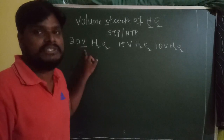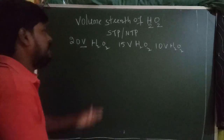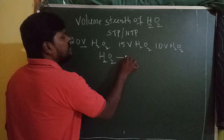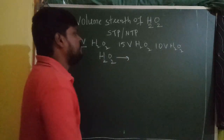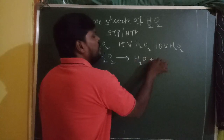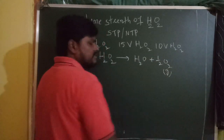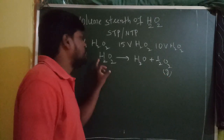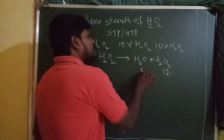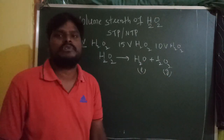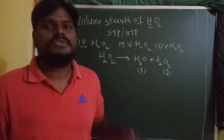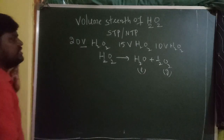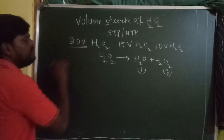To understand this, you need to know one important concept: H₂O₂ decomposes to form H₂O and oxygen gas. So finally, oxygen gas (O₂) is released when H₂O₂ decomposes. H₂O is a liquid, and the gas produced is O₂. Now, what is the relation between 20V of H₂O₂ and this decomposition?